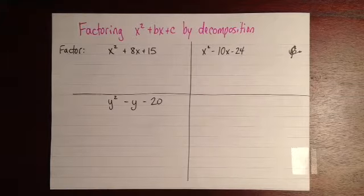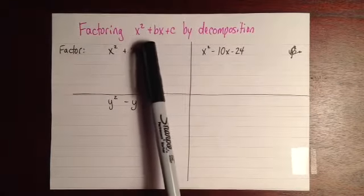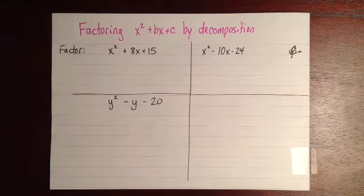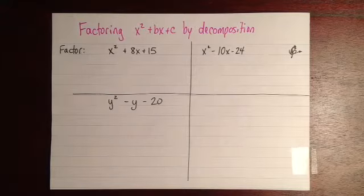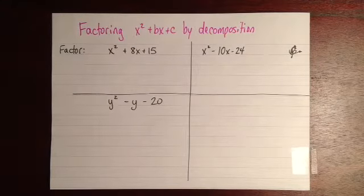We're just going to do it for factoring x squared plus bx plus c, so trinomials with a value of 1, which has got 1x squared, because it's a little bit easier. And then in the next video, in 2B, I'll show you how to do it if you've got a different number of x squareds. So I've got three factoring questions here. The first one, factor x squared plus 8x plus 15.